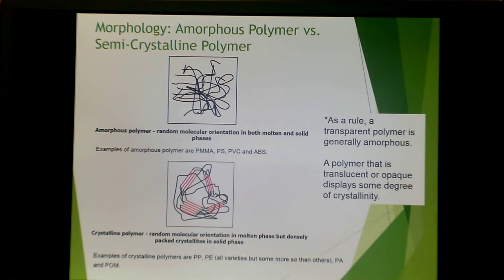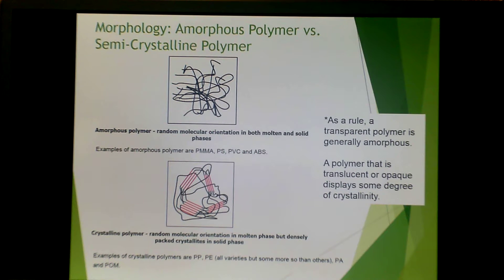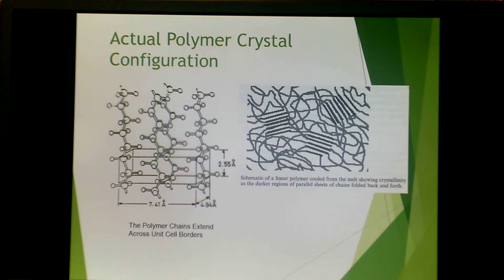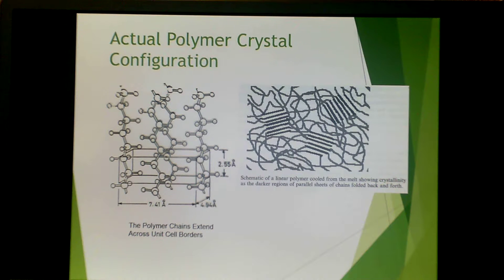As a rule, a transparent polymer is generally amorphous, whereas a polymer that is translucent or opaque displays some degree of crystallinity. In an actual crystal polymer conformation, a polymer chain extends across the typical unit cell borders, and you tend to see crystallites interspersed between different regions of amorphous polymer.